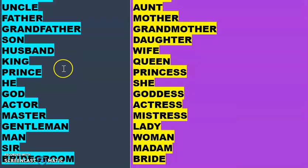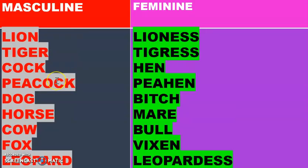Now coming back to animals — some examples are cited: lion/lioness, tiger/tigress, cock/hen, peacock/peahen, dog/bitch, horse/mare, cow/bull, fox/vixen, leopard/leopardess.